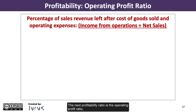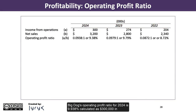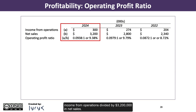The next profitability ratio is the operating profit ratio, which is simply the percentage of sales revenue left after cost of goods sold and operating expenses. We calculate it by taking the income from operations and dividing by net sales. Big Dog's operating profit ratio for 2024 is 9.938%, calculated as $300,000 in income from operations divided by $3,200,000 in net sales. For every $1 in net sales, the company generates 9.38 cents in operating profit.